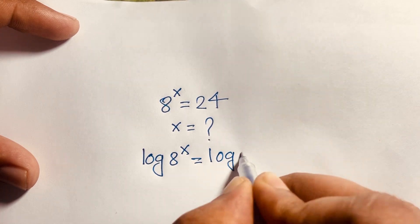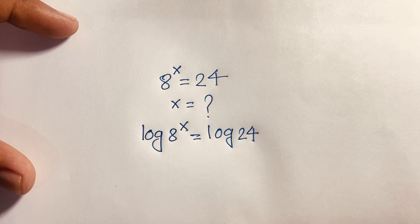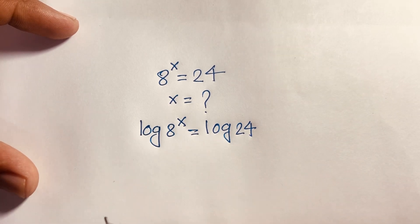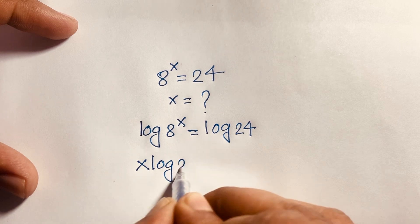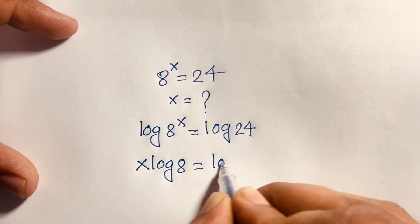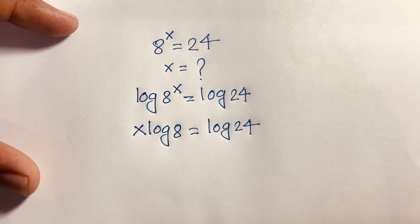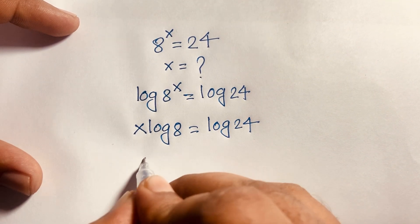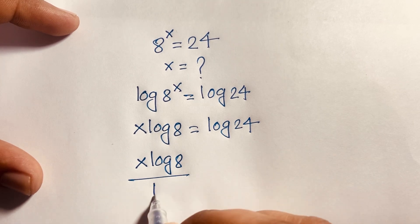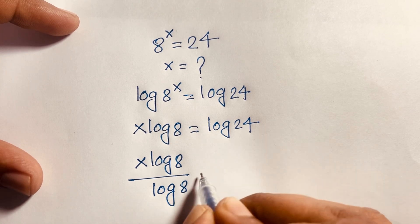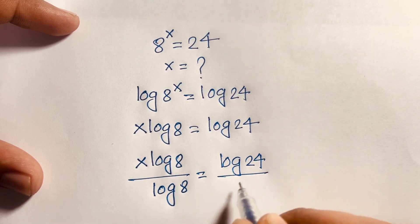According to logarithm rules, the exponent can be brought down, so x·log(8) is equal to log(24). Then, dividing both sides by log(8), we get x·log(8) over log(8) is equal to log(24) over log(8).